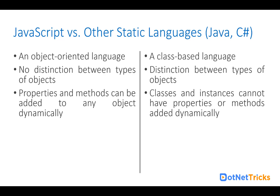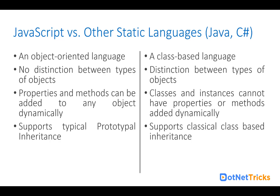If there is a requirement, you have to add it into the class. JavaScript supports prototypical inheritance, whereas static languages support classical class-based inheritance. In C# and Java, we create a parent class, then a child class, and define the hierarchy between the classes. But in JavaScript, inheritance is done using the prototype.